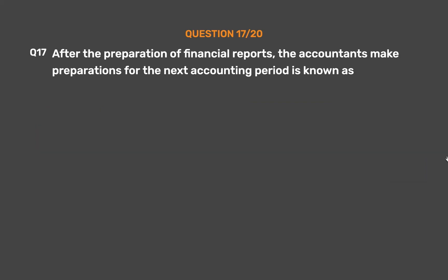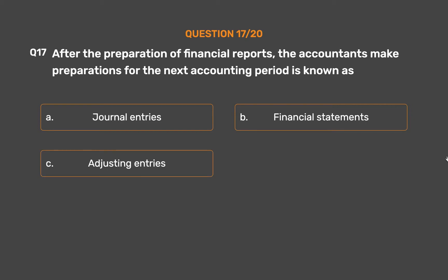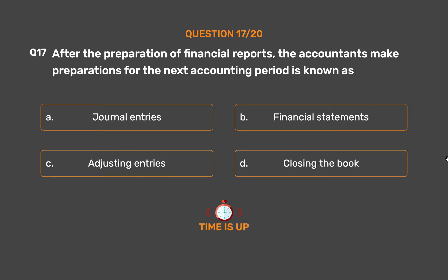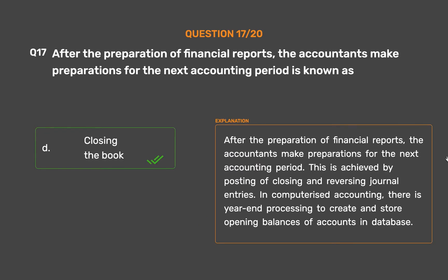Question number 17. After the preparation of financial reports, the accountants make preparations for the next accounting period. This is known as: Option A: Journal entries. Option B: Financial statements. Option C: Adjusting entries. Option D: Closing the book. The correct answer is Option D: Closing the book. After the preparation of financial reports, the accountants make preparations for the next accounting period, achieved by posting of closing and reversing journal entries. In computerized accounting, there is year-end processing to create and store opening balances of accounts in the database.